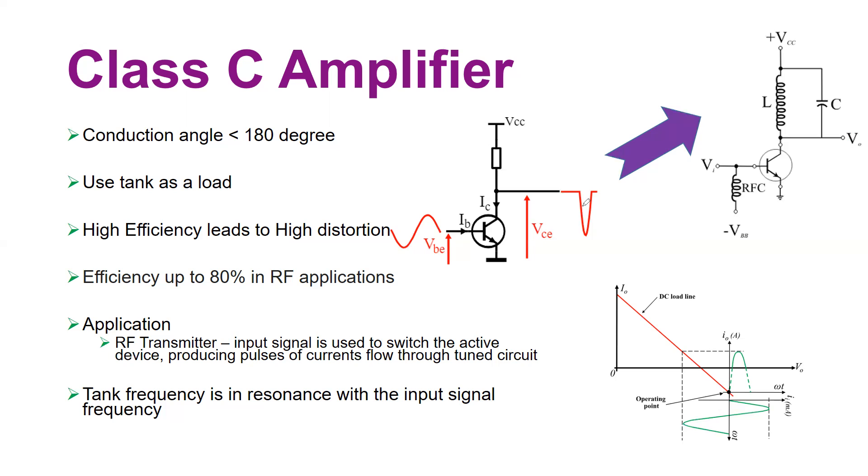Where is the application of this Class C amplifier? In radio frequency amplification, such as your radio transmitter—RF transmitter—you use this kind of circuit where your input signal is used to switch on this transistor for a limited amount of time that produces short pulses.